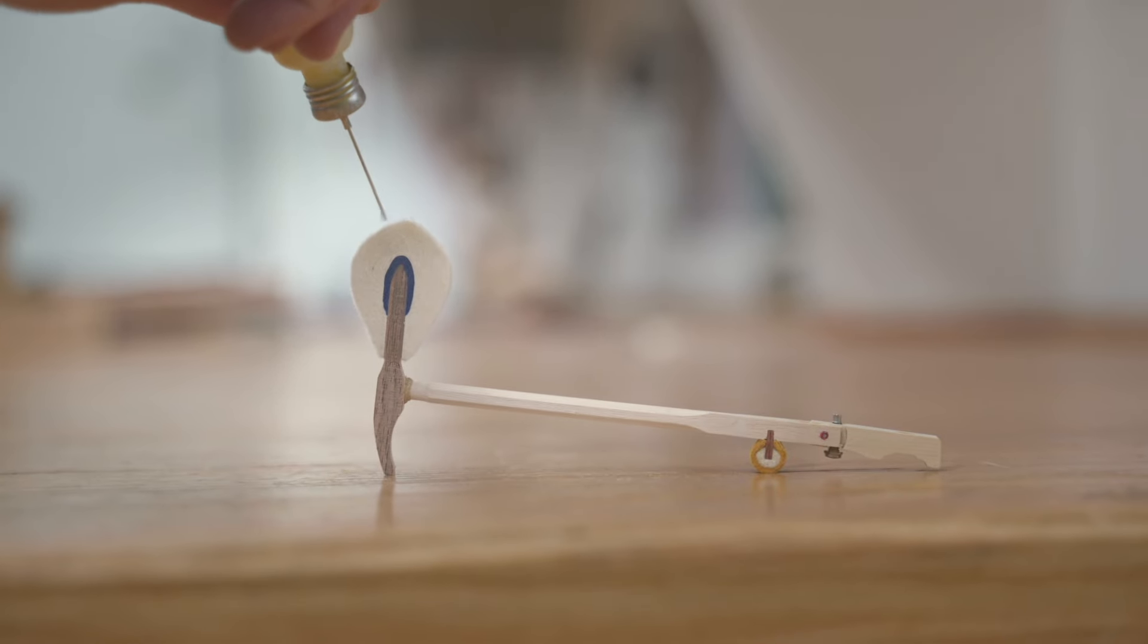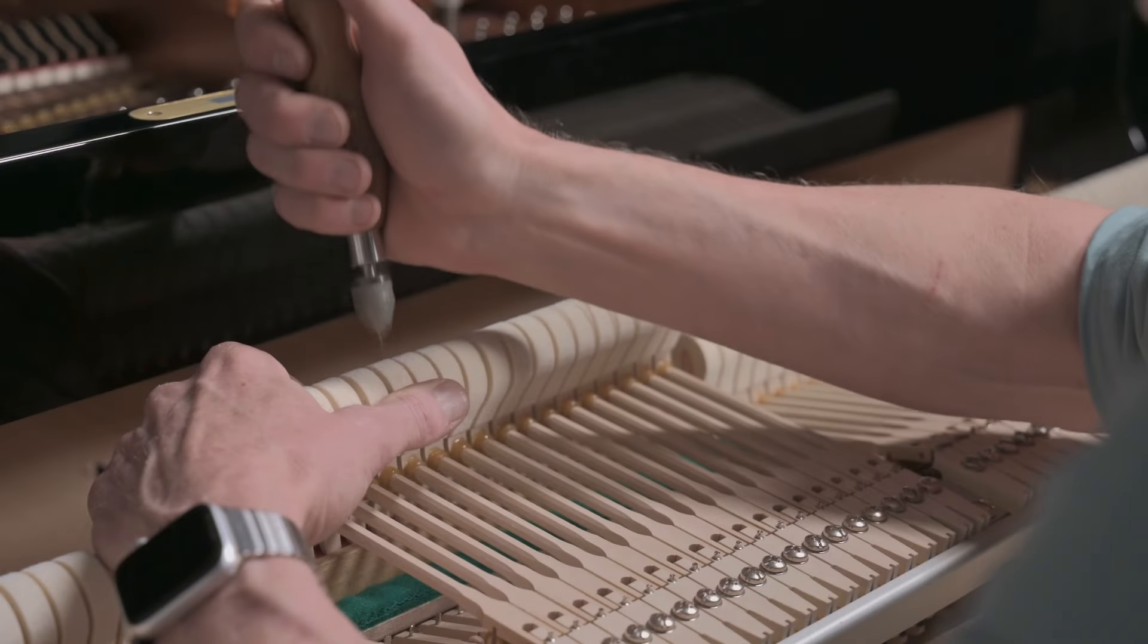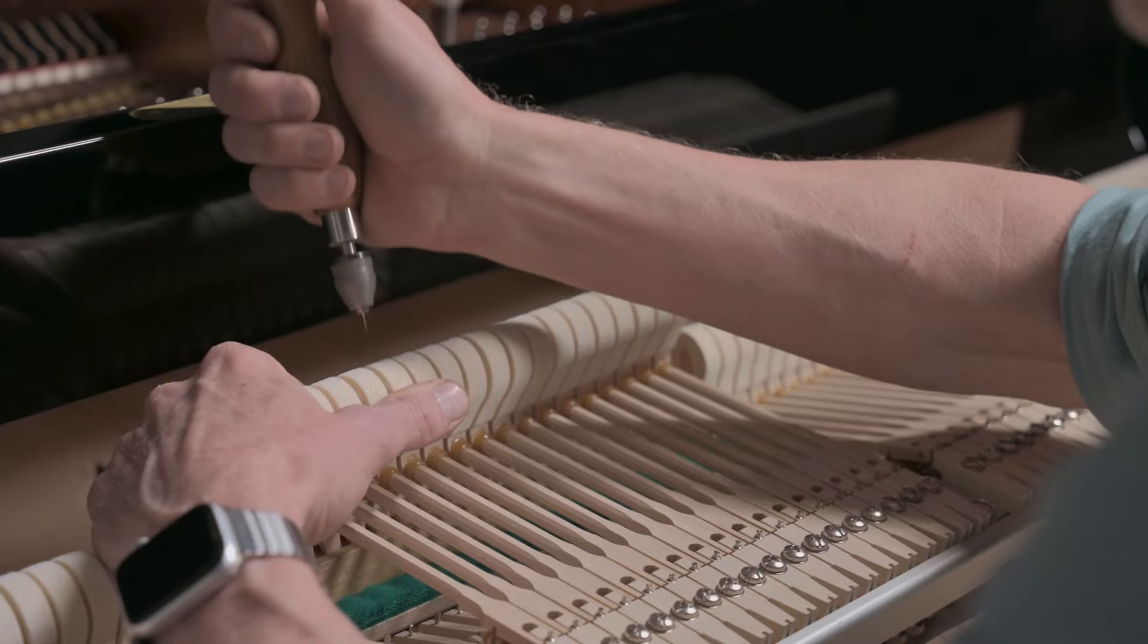To make the hammer harder we add chemicals to increase the density and then let it dry. To make it softer we needle it to make it more flexible.